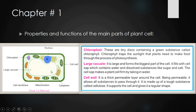Now let us come to the large vacuole. As we saw, animal cells have many small vacuoles, but plant cells have only one large vacuole. It is large and forms the biggest part of the cell. It fills with cell sap, which contains water and dissolved substances like sugar and salt. The cell sap makes the plant cell firm by taking in water.